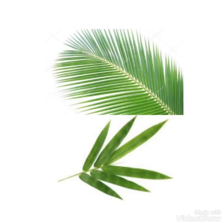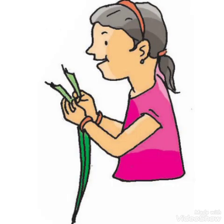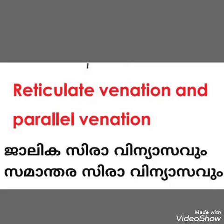Then take the leaves of bamboo and coconut, and try to tear them as seen in the picture. Okay dears, we are going to study about the differences among leaves. This is reticulate venation and parallel venation.